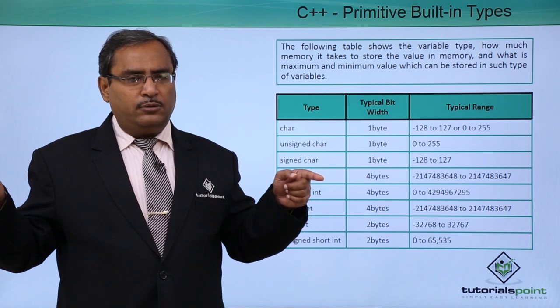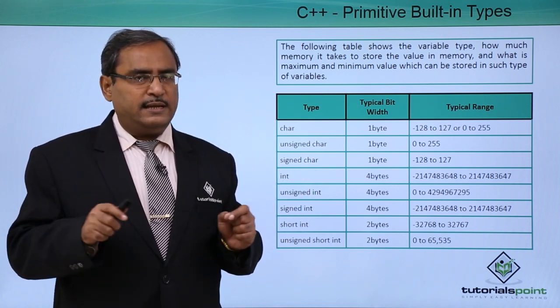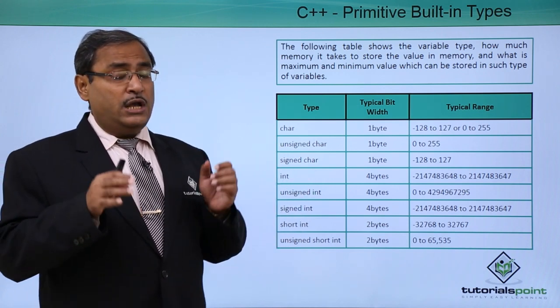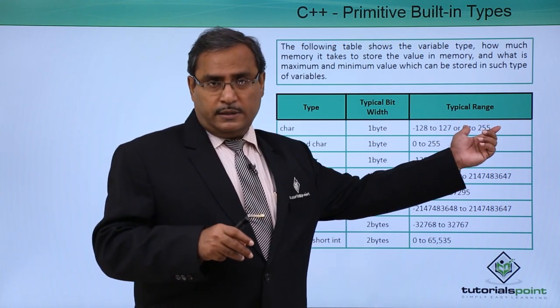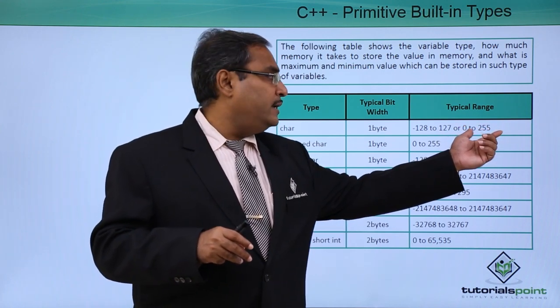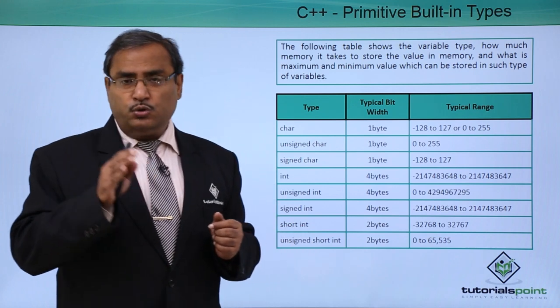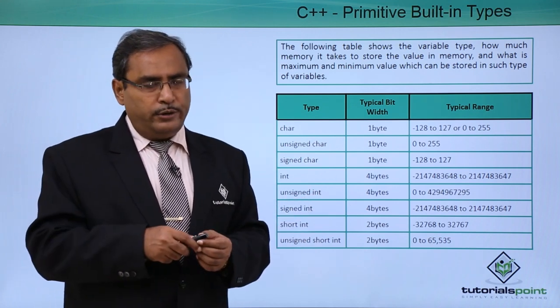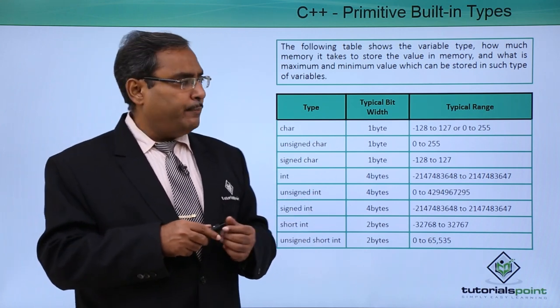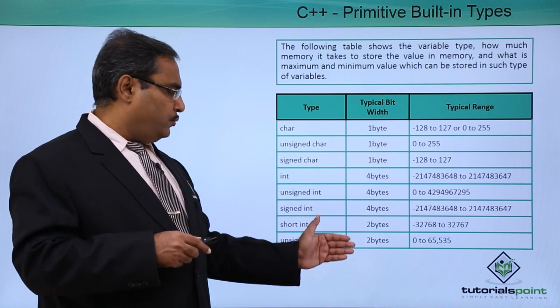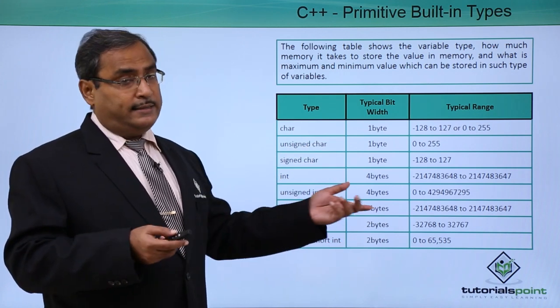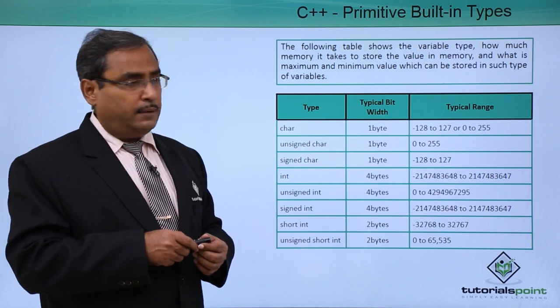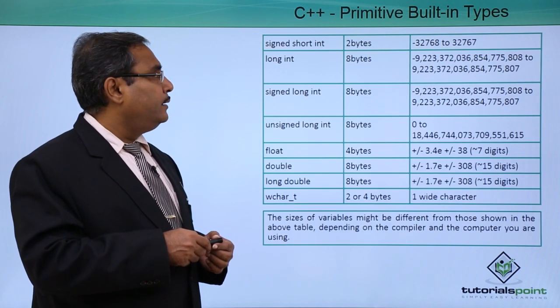In this way, if you go on calculating, we have 256 number of combinations. If we consider only the positive part, only the positive representation, that is unsigned, it will range from 0 to 255. Again you're going to get back your 256 number of combinations. We have one data type, that is a bool data type, and that will be also occupying 1 byte in the computer's memory.